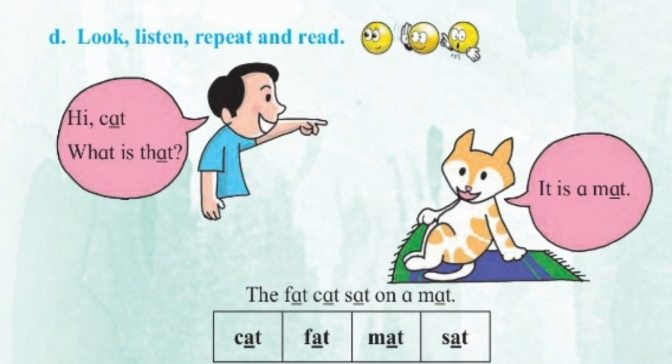Activity D: Look, listen, repeat and read. Paha, Aika, Mana and Vacha. Hi cat, what is that? It is a rat. The fat cat sat on a mat.